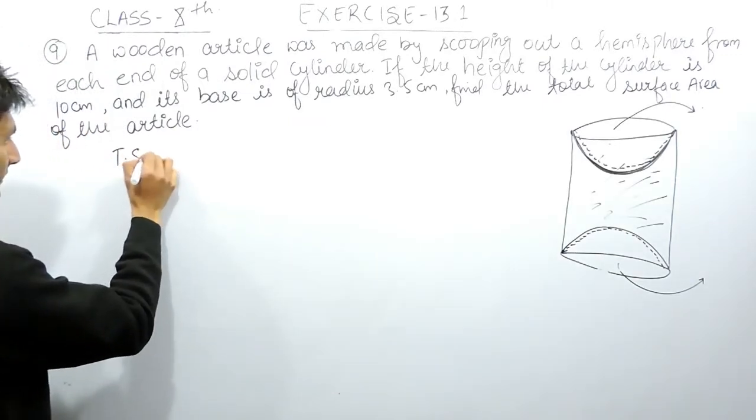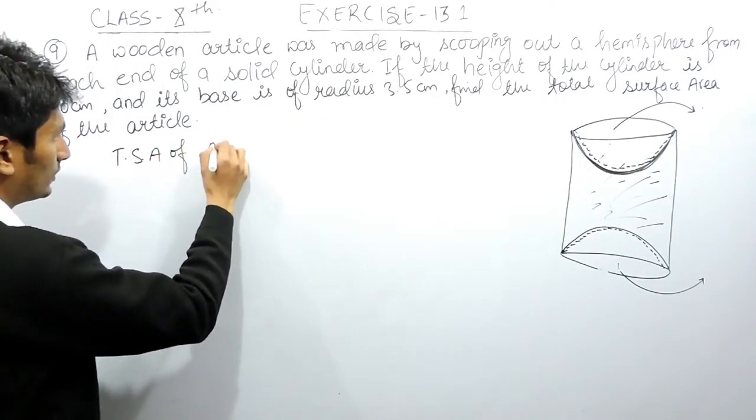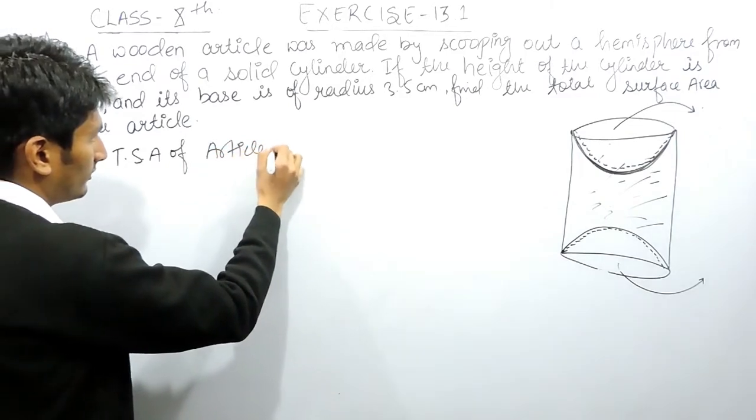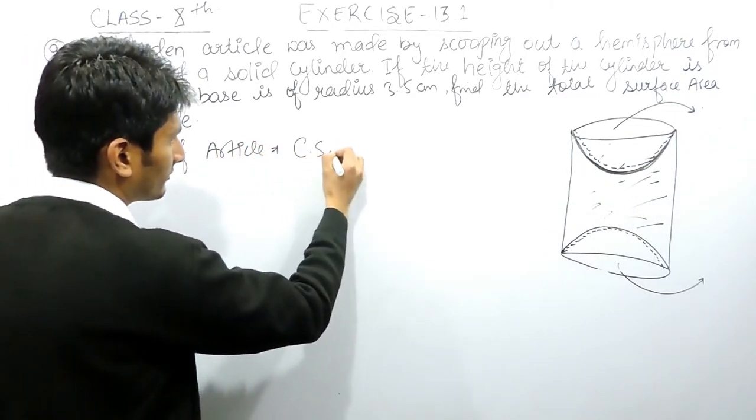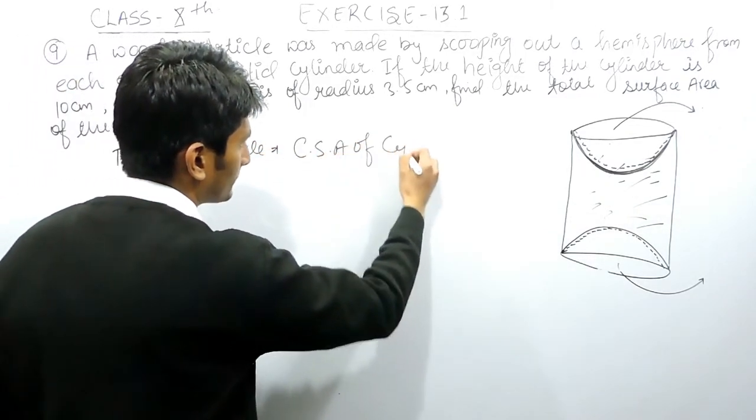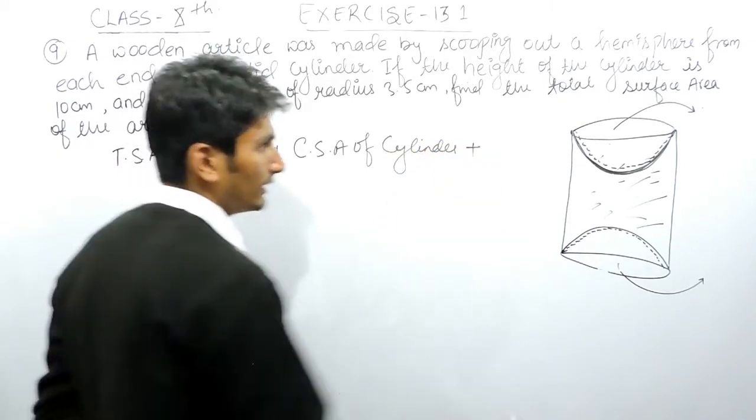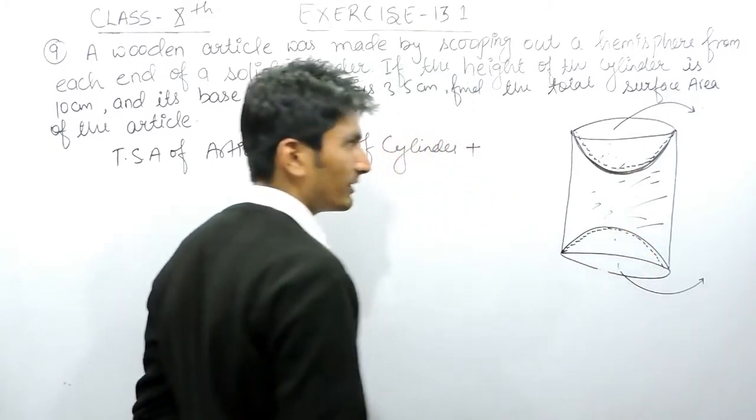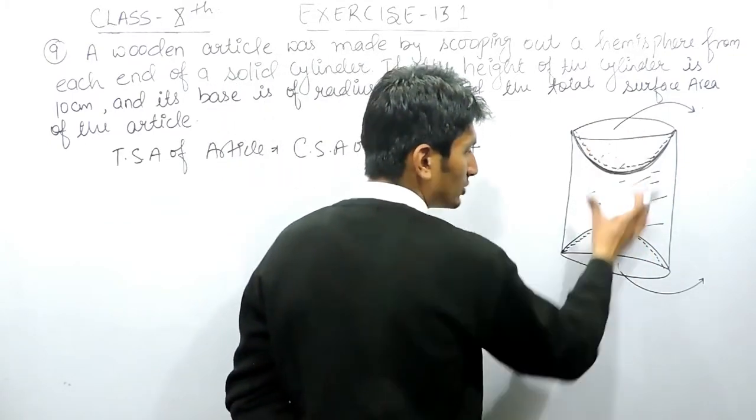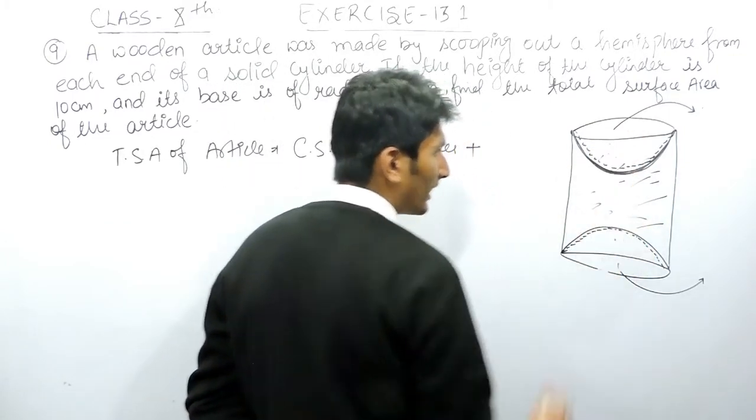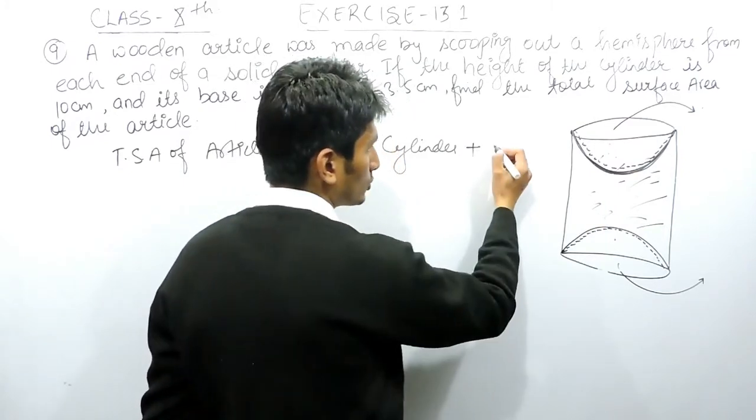Now, if I have to find out the total surface area of this article will be equal to the curved surface area of the cylinder plus these are two curved surface area of hemisphere. And if I join these two hemispheres, this will form a complete sphere.